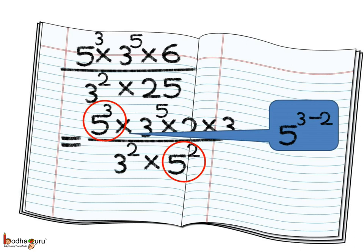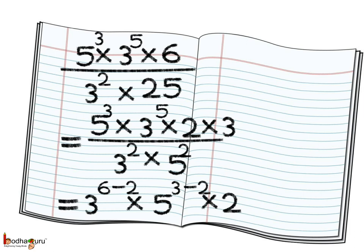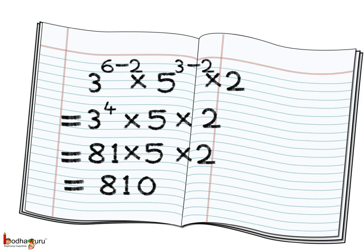For the 5 terms, in the numerator we have 5 to the power 3 and in the denominator 5 to the power 2, so we get 5 to the power 3 minus 2. Thus we get 3 to the power 4 multiplied by 5 to the power 1 multiplied by 2. 3 to the power 4 is equal to 81. Multiplying with 5 and 2 we get 810. So the answer is 810.